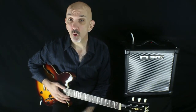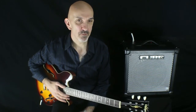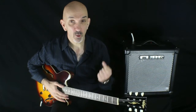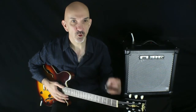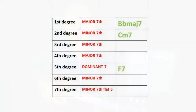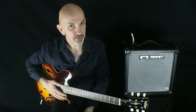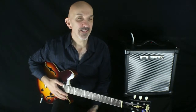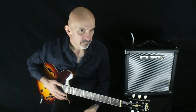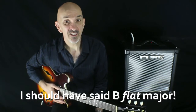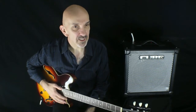What would you automatically expect at this point? That a 2-5 progression would be followed by a one chord to complete a 2-5-1 progression. Lo and behold, the third chord is indeed a B-flat major seven chord. So, 2-5-1 in the key of B-flat major. We now strongly suspect that the song is indeed in the key of B-flat major.